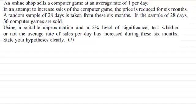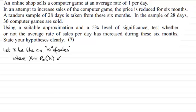Okay, welcome back. If you had a go, first of all, what I want to do is set up our random variable. I'm going to call it X, so let X be the random variable—the number of sales. Now X will follow a Poisson distribution, so where X is distributed as a Poisson distribution with a mean of lambda.